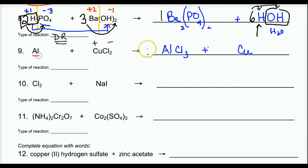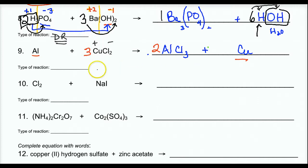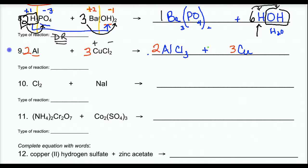I've got one aluminum on each side, one copper on each side, two chlorine ions on the left, and three chlorine ions on the right — a 2-to-3 scenario. I find the least common multiple: 6. Put a 2 on the left side to make 6 chlorines, and a 3 on the right side. That unbalances the copper, so I put a 3 there. I have 2 aluminum, so I put a 2 here. Same type of atom on both sides — law of conservation of matter. By the way, you'll be doing this reaction in a lab. Type of reaction: single replacement.